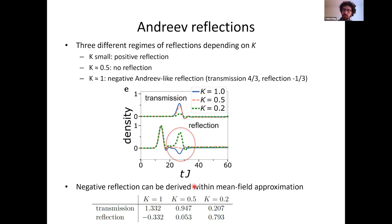What we demonstrate is that you can observe a kind of Andreev effect using bosonic atoms — although the origin is different, with no Cooper pairs involved. Instead it is related to a wave-mechanical effect.